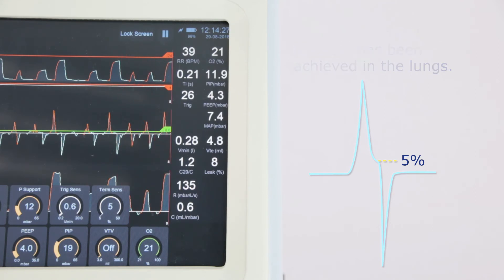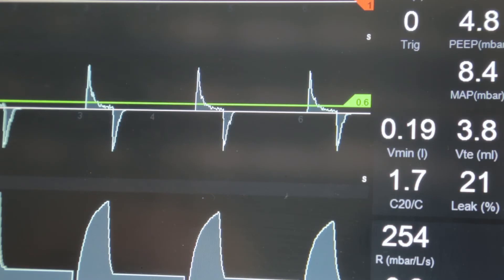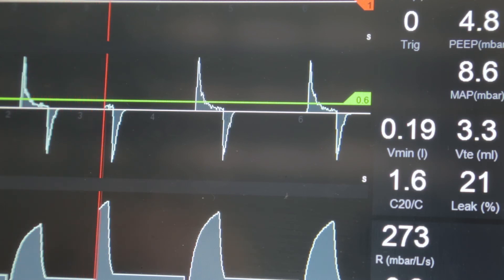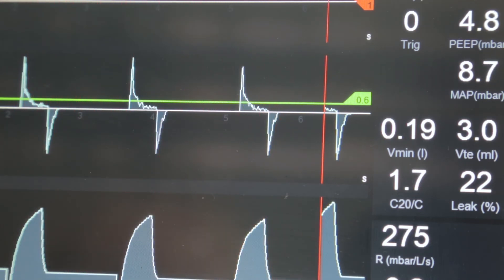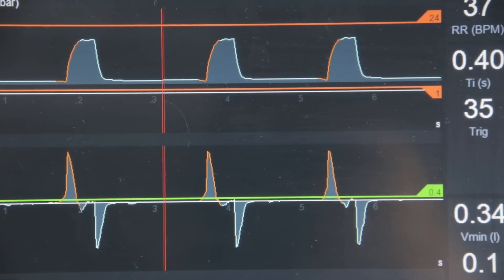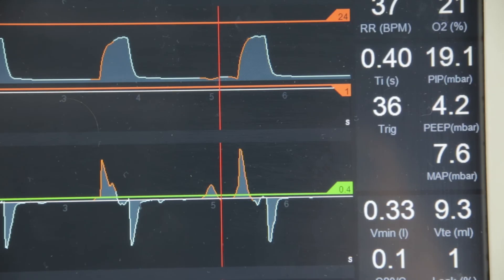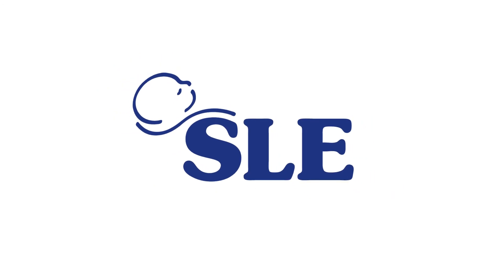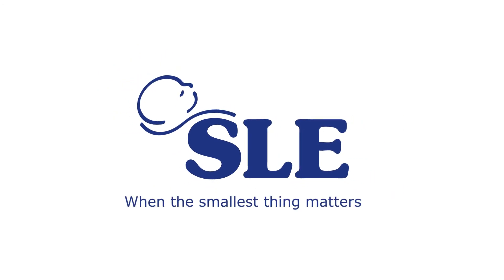There is an automatic leak compensation for leaks between 10 and 50%. The flow increases to the level of the leak and thereby flow terminates the breath. If no flow triggering is seen, check that the inspiratory trigger has been set correctly.